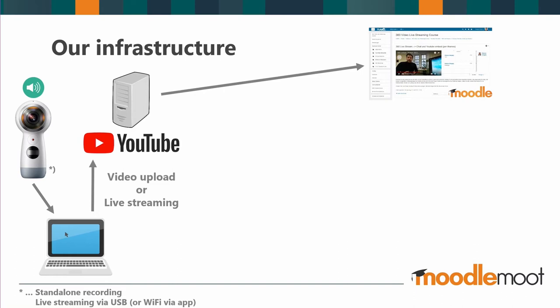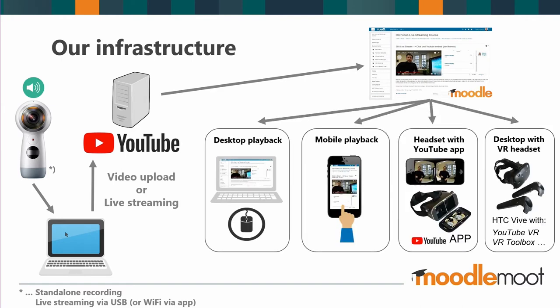The big question was: how can students access this content? We identified four possible solutions. Number one: they have a laptop or computer at home and can access 360 content with their mouse, opening it in full screen and clicking to move around in the 360 world — not really immersive, but accessible. Number two: mobile playback — they open the live stream in YouTube and by finger touch can move around the 360 content.